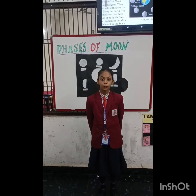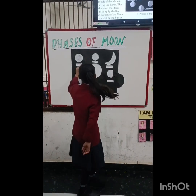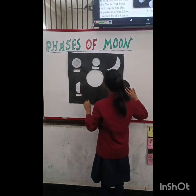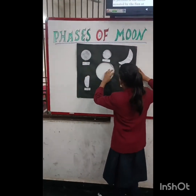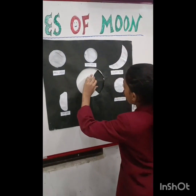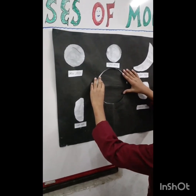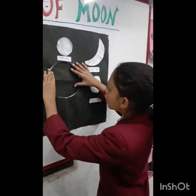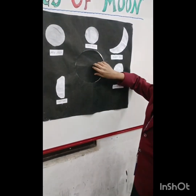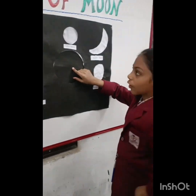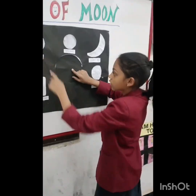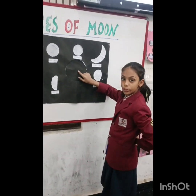New moon. In this phase, the illuminated side of the moon is away from the earth. The side of the moon that faces the sun cannot be seen from the earth. This phase is called the new moon.